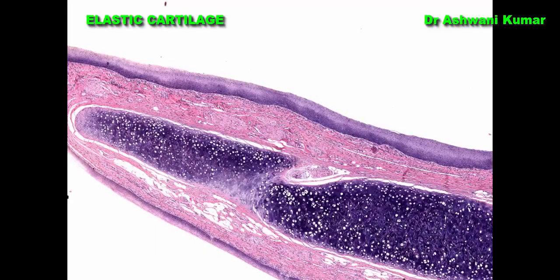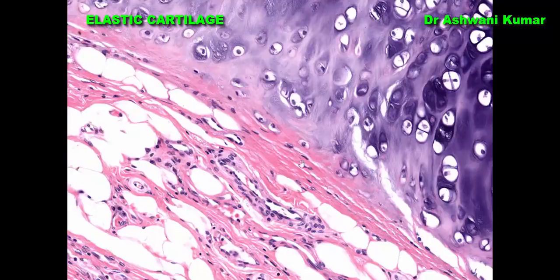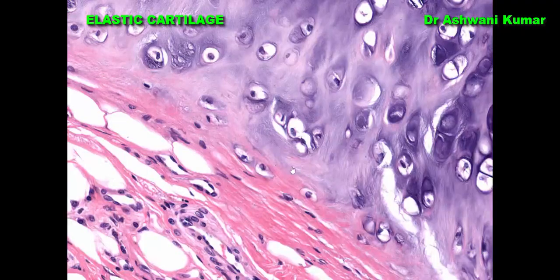This is the section of the epiglottis to illustrate elastic cartilage. The perichondrium, just like in hyaline cartilage, is divided into the outer fibrous layer and the inner chondrogenic layer just beneath it. The chondrocytes within lacunae may occur as a single cell or as a cluster of two cells — an isogenous group.